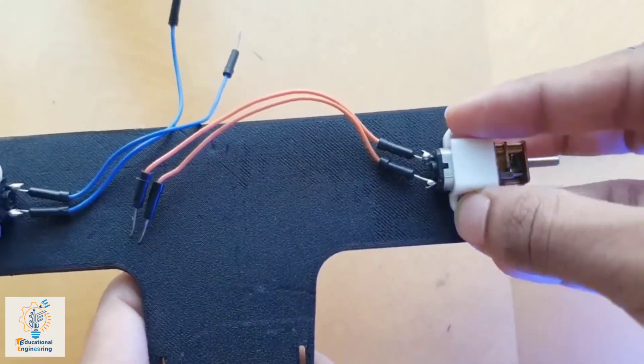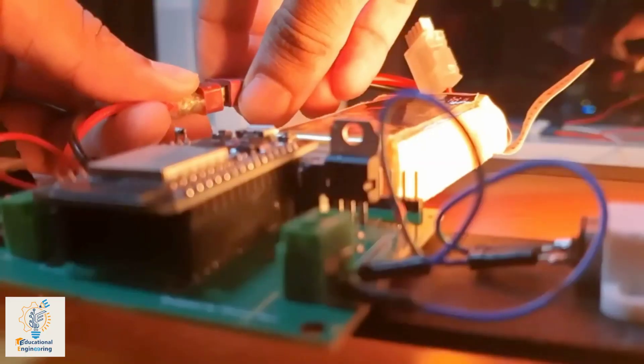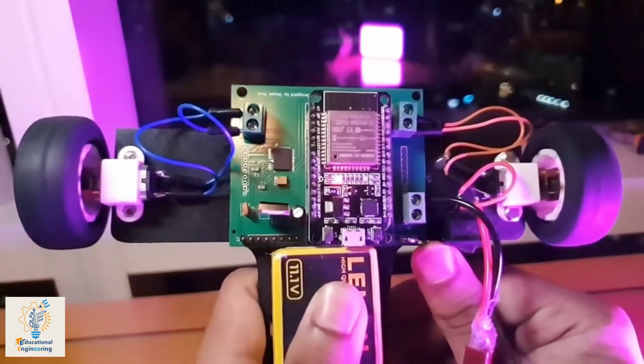To start with, Ravi used only those components that were lightweight, so that the overall weight of the bot was reduced.